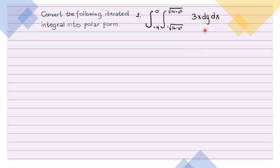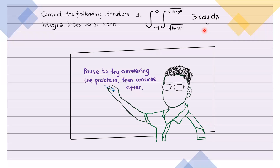We want to find the double integral of 3x dy dx, with y from negative square root of 16 minus x squared to square root of 16 minus x squared, and x from negative 4 to 0. Katulad sa first part, bigyan ko muna kayo ng pagkakataon na pag-isipan ito. So kung gusto nyo subukan na sagutan ito on your own muna, pause nyo lang.